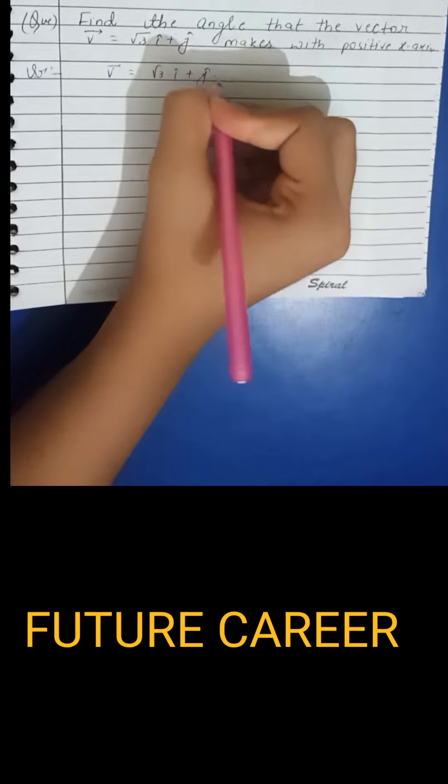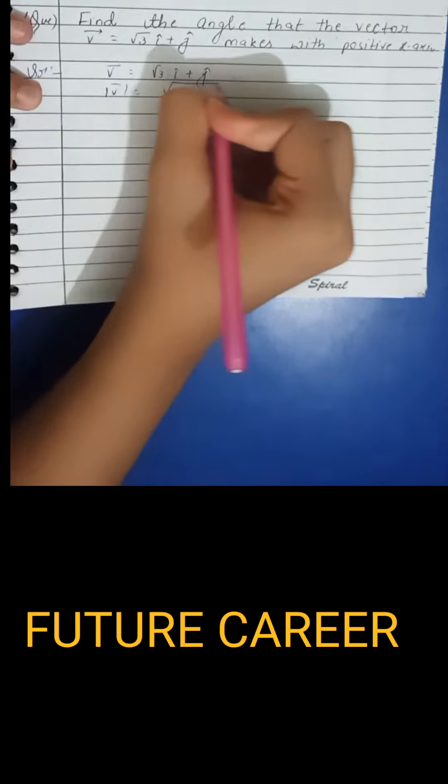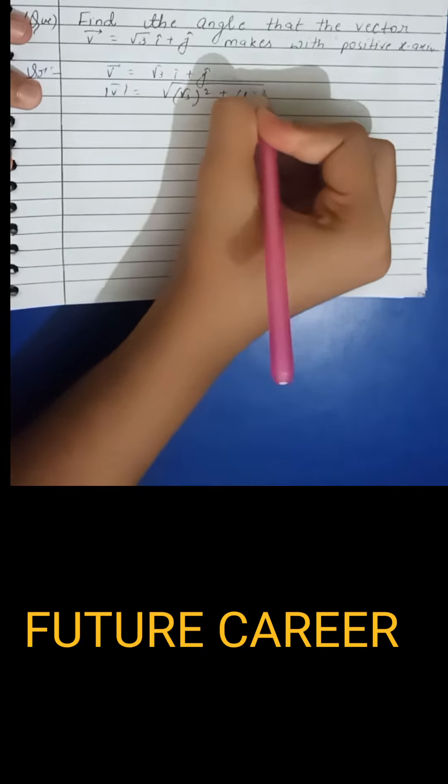So magnitude of v vector = √((√3)² + 1²) which equals √(3 + 1) = √4 = 2.